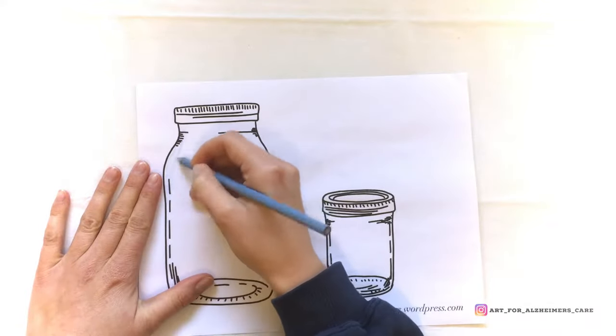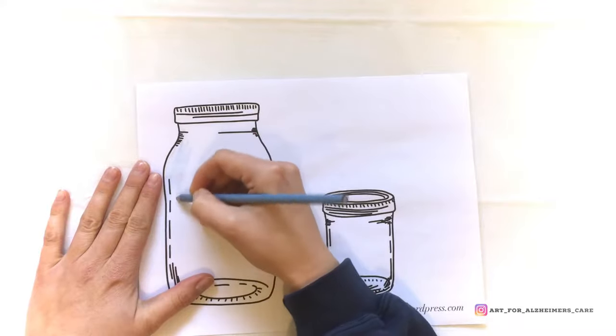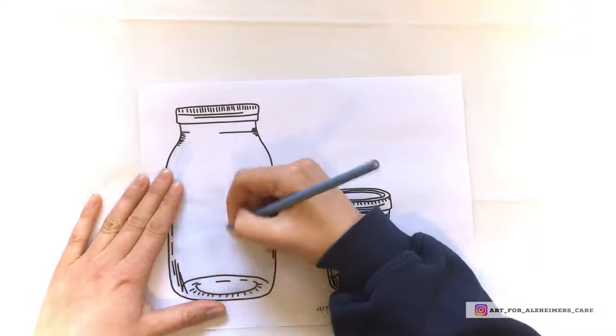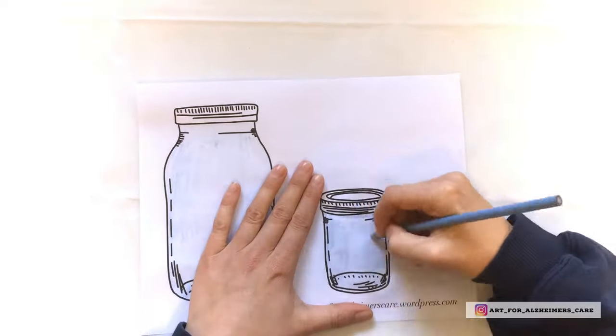Now to get started I colored in the two jars. This is optional, you totally don't have to do this, but I thought that it might give a more glass-like effect if I colored them in. Just looks a little less plain.